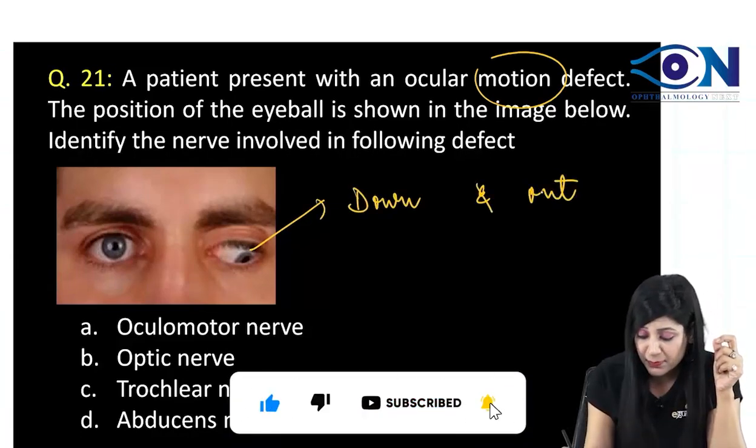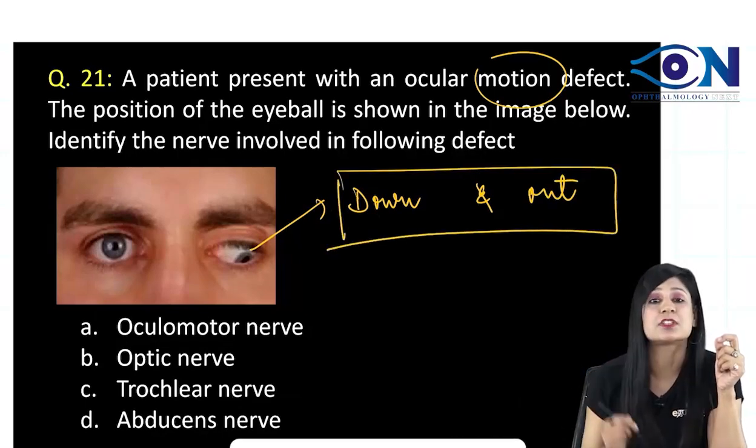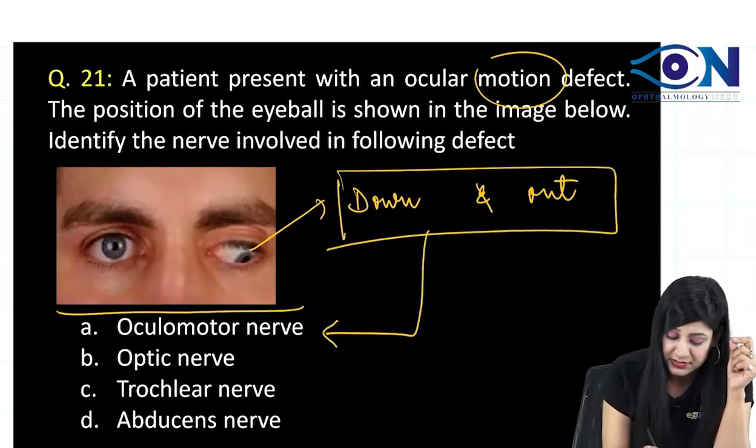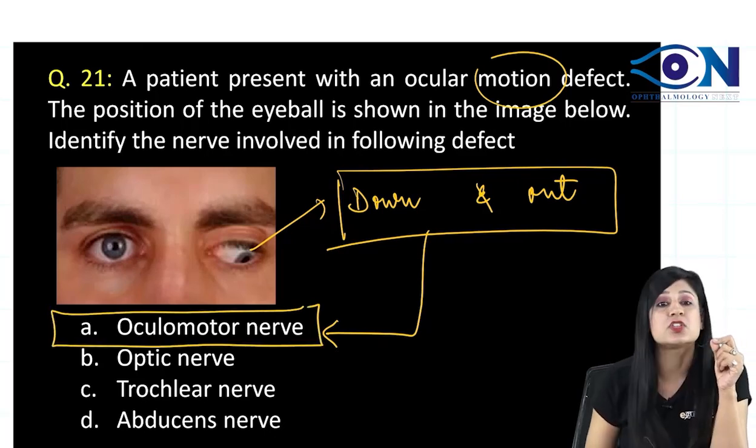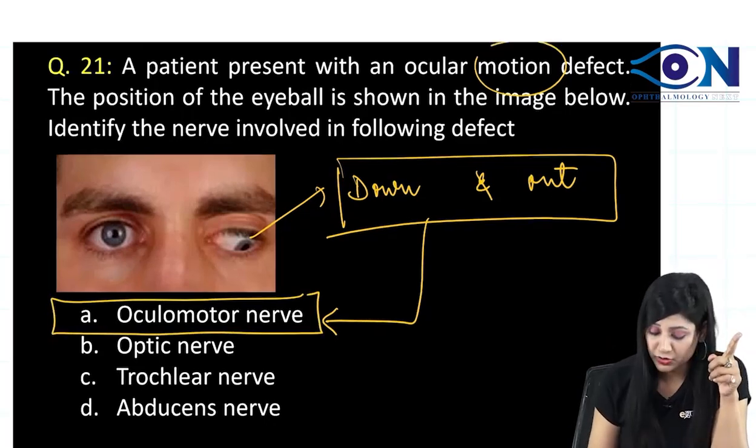Now, always remember this: whenever we have the position down and out, it is always third nerve palsy. So the answer to this question is the defect of oculomotor nerve.